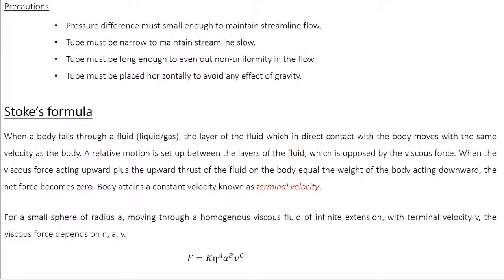Let's calculate the exact relationship between terminal velocity and the viscous force. Take the case of a small sphere of radius A, which moves through a homogenous viscous fluid of infinite extension with terminal velocity V. The viscous force depends on three parameters: coefficient of viscosity eta, radius of the sphere A, and terminal velocity. I can write F is proportional to eta^A, A^B, V^C, where A, B, C are unknown constants. I can replace proportionality with a constant K, which is dimensionless.